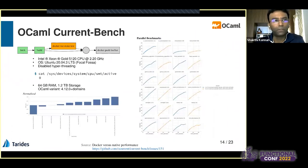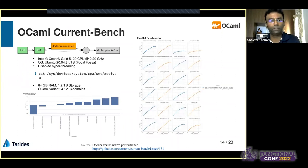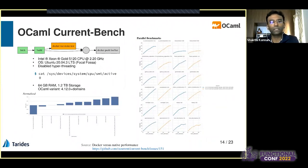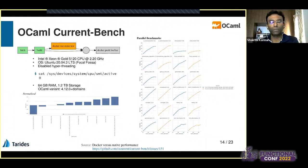We also experimented with Docker. Current Bench is an OCaml pipeline that allows us to create custom builds. We found Docker versus native builds to be very close — not much difference. With all the tuning settings mentioned earlier, we were able to run Sandmark inside Docker with the Current Bench pipeline, and this is something we plan to expand in the future.